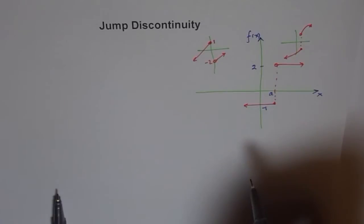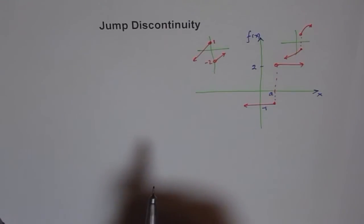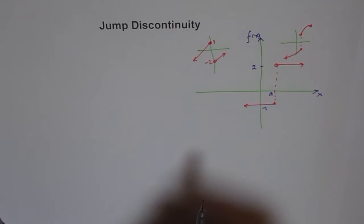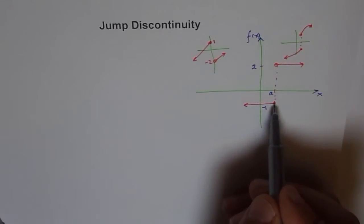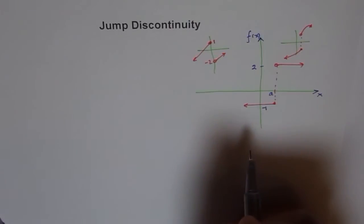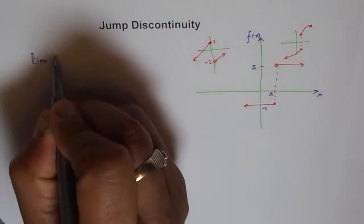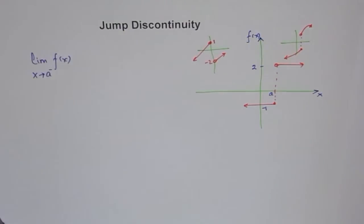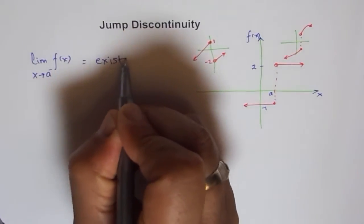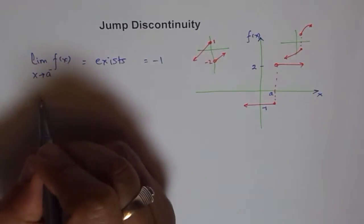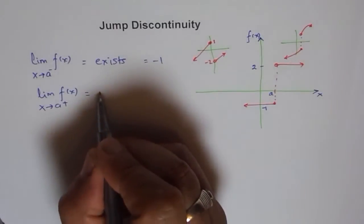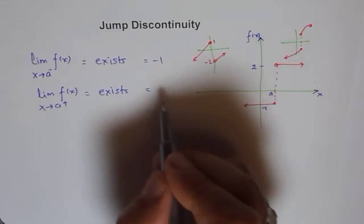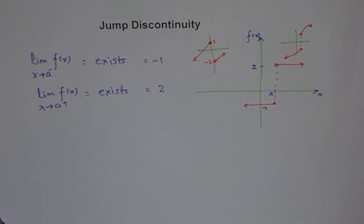So how will you define it? A function has a jump discontinuity at a if it has one-sided limits. From this side it has a limit — we are approaching minus 1 — and from the positive side it has a limit — we are approaching 2. The limit of f(x) as x approaches a from the negative side exists; in this case it equals minus 1. And the limit of f(x) as x approaches a from the positive side also exists; in this case it is plus 2.